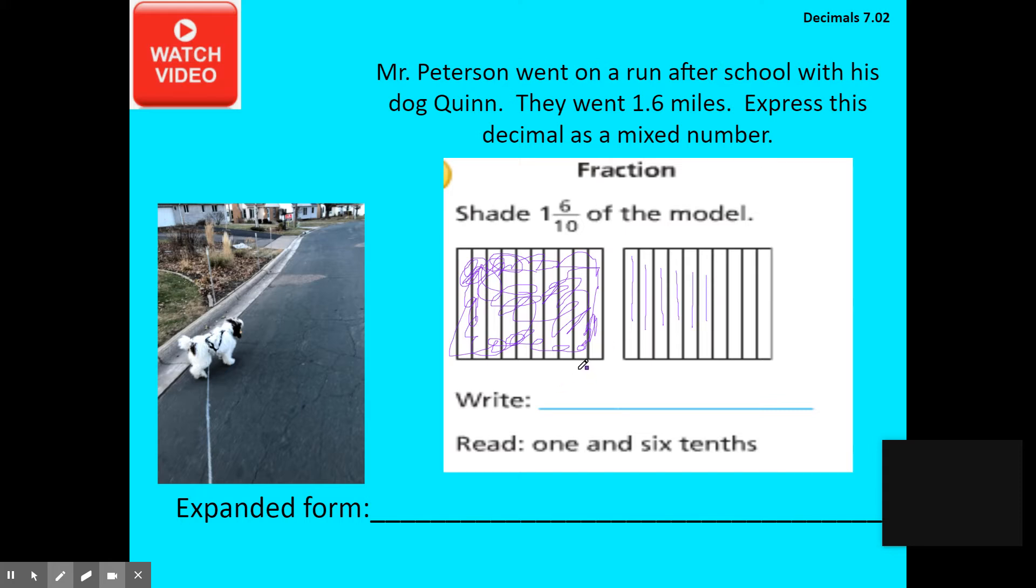As I write this in standard form, I'm going to write one and six tenths. It's not one decimal six. It's one and six tenths. My expanded form, I have one whole and I'll add my six tenths as a decimal. I could also express that as a fraction.